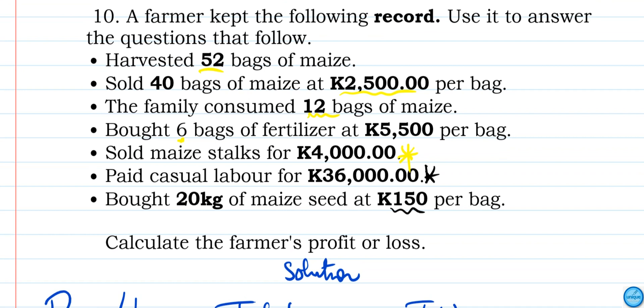Profit or loss is equal to total income minus total cost. That's the formula which we use. So we need to identify the incomes and the expenses. Let's identify the incomes and the expenses.